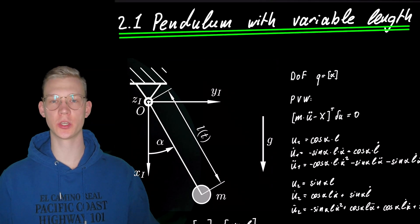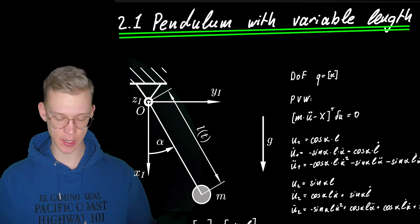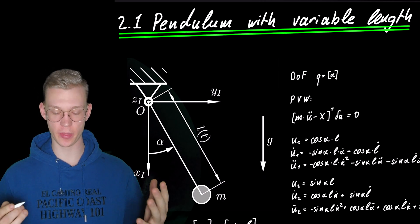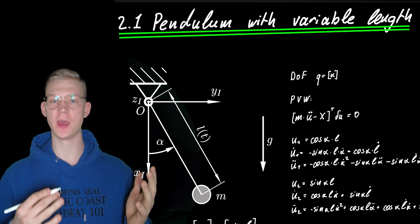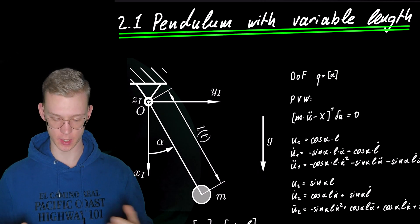Ladies and gentlemen, welcome to Engineering Dynamics. In this video we will be talking about this exercise where we want to get the equations of motion of a pendulum with variable length. We will first do it with the principle of virtual work and then with the Lagrange 2 formalism. Let's jump right in.